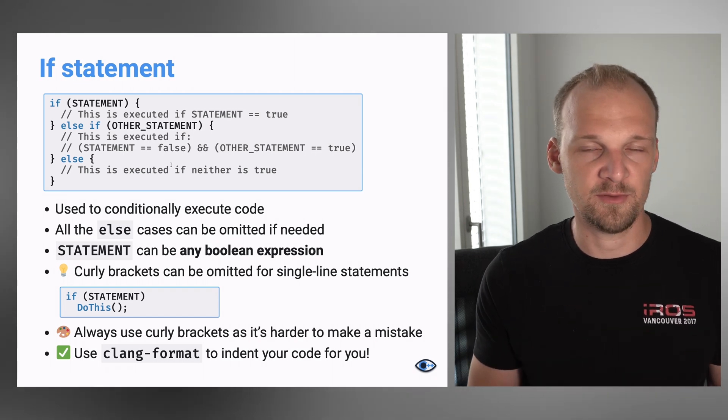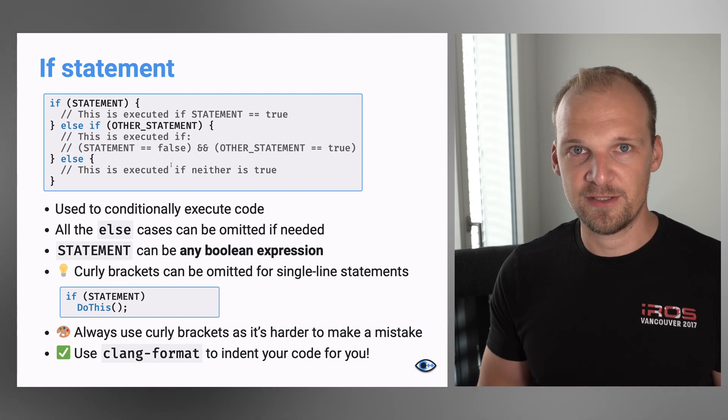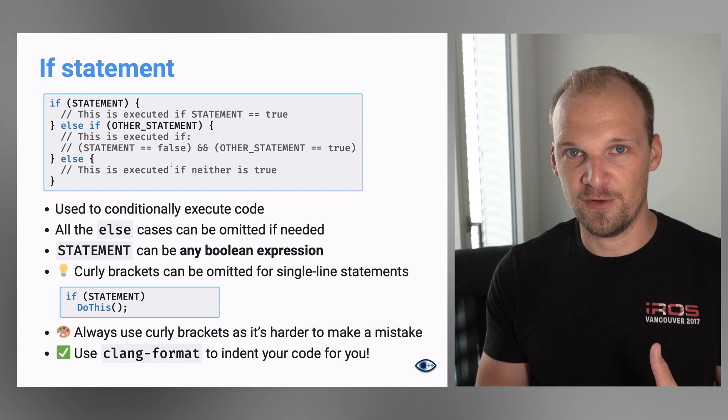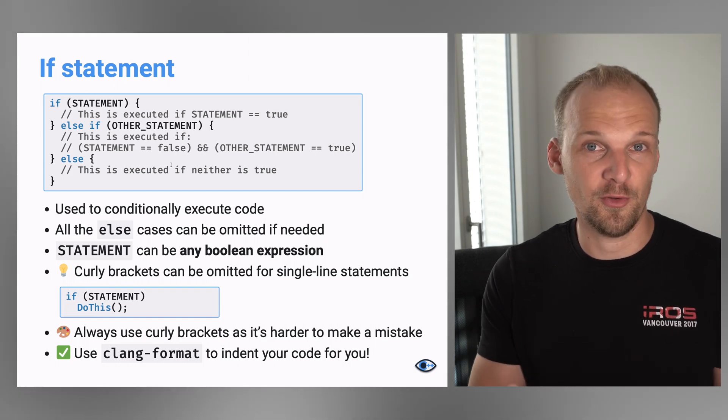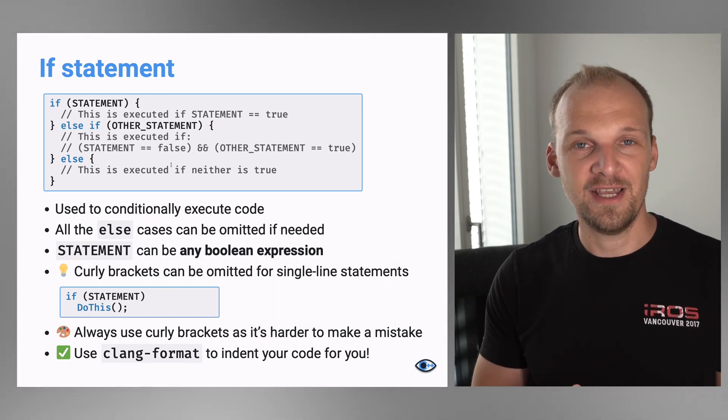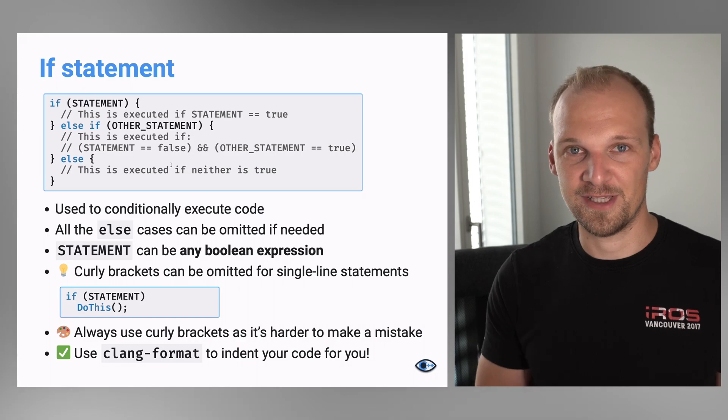When I say statement, what I really mean is something that evaluates to a boolean expression. It can be any form of operations that lead up to a boolean variable, or it can be a boolean variable itself. When we get to functions, this can also be a function that results in a boolean. Technically you can provide an int — everything that is not zero will be true, and zero will be false — but I wouldn't say this is a great idea. Try to actually use boolean where boolean should be used.